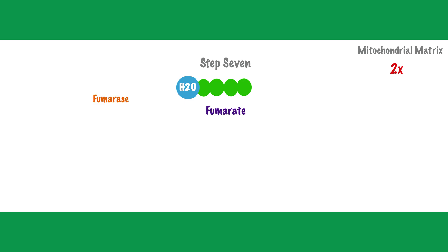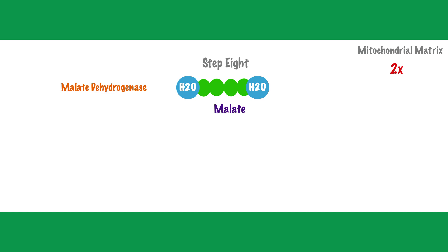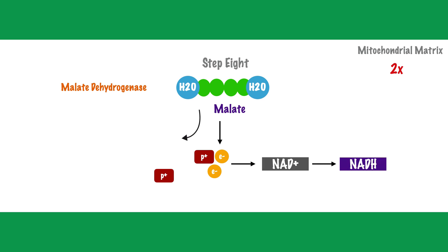For step seven, the enzyme fumarase acts on fumarate, and water adheres to fumarate, converting it into malate. For the final step — step eight — the enzyme malate dehydrogenase acts on malate. Two electrons and two protons are removed; one proton remains behind in the mitochondrial matrix, while both electrons and one proton are attached to NAD to become NADH. As a result, we end up with oxaloacetate, which awaits the arrival of the next acetyl molecule to repeat the citric acid cycle.